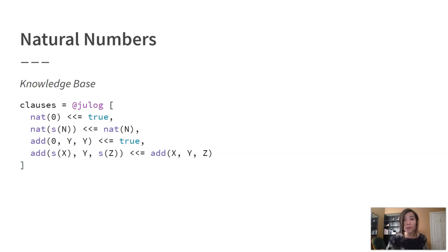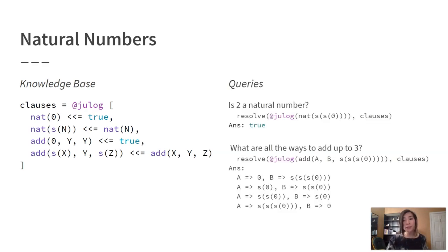So that's the algorithm. To illustrate the capabilities of this sort of reasoning, we can use Julog to define basic arithmetic relations among the natural numbers, such as the successor relation and addition. Here we represent numbers using the successor representation: S(0) is 1, and S(S(0)) is 2. We can then ask queries like: is 2 a natural number, or what are all the ways to add up to 3? The fact that Julog can return multiple answers to the second question is one of the useful features of logic programming.